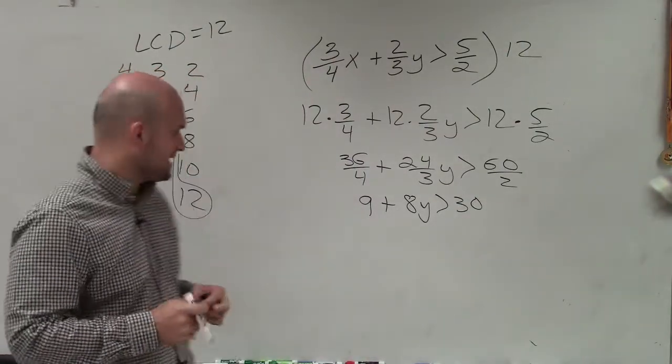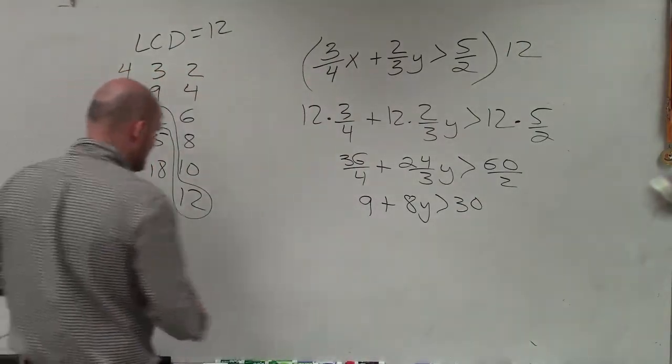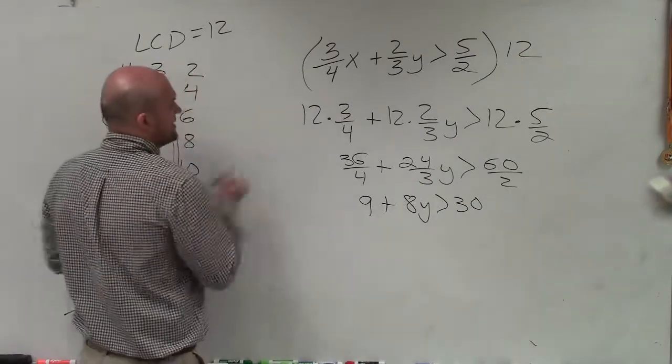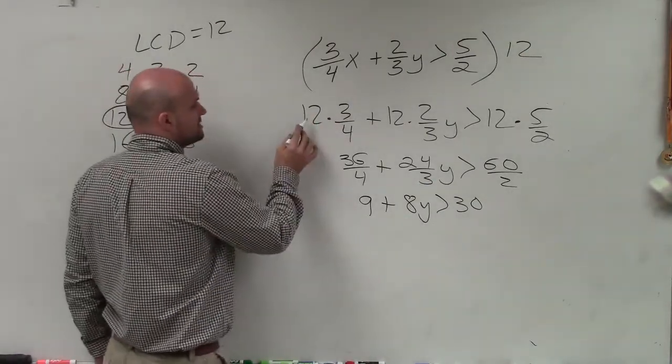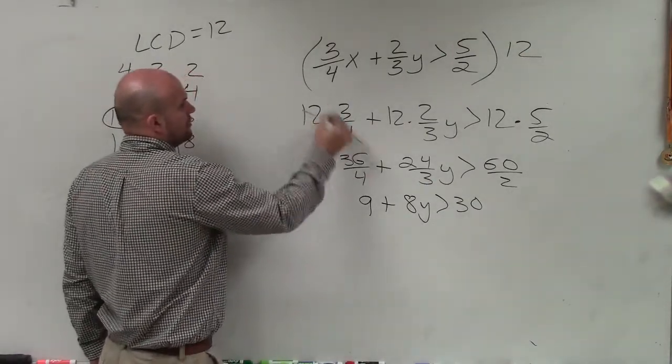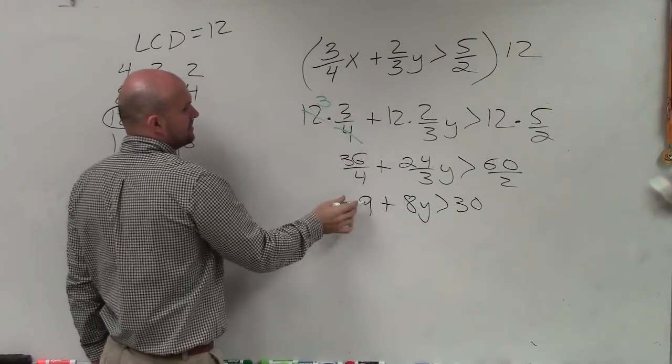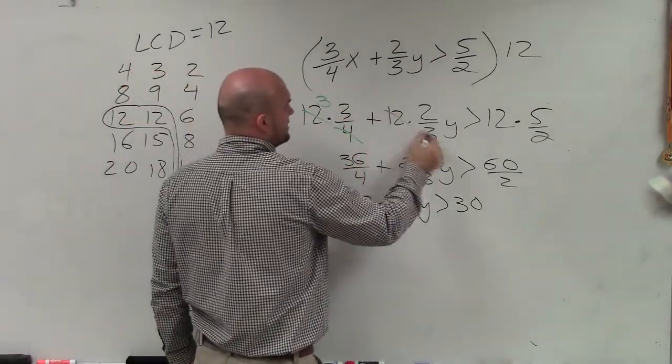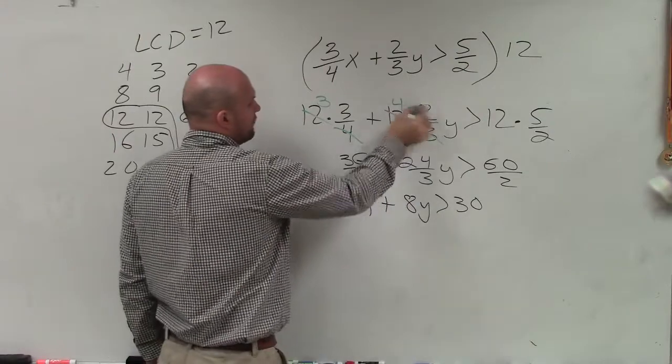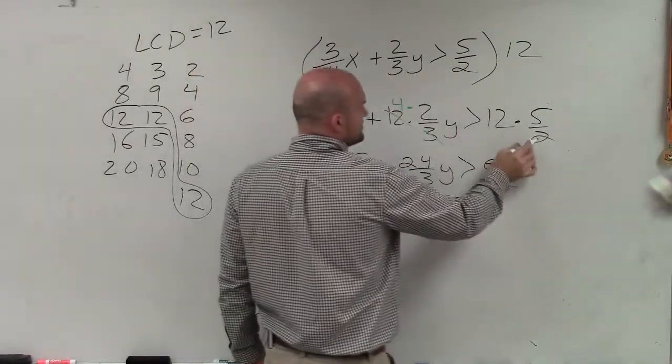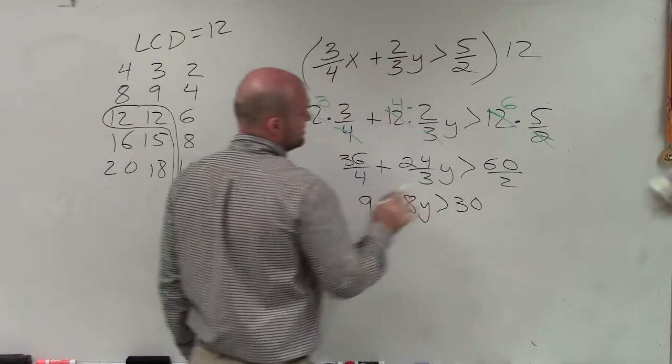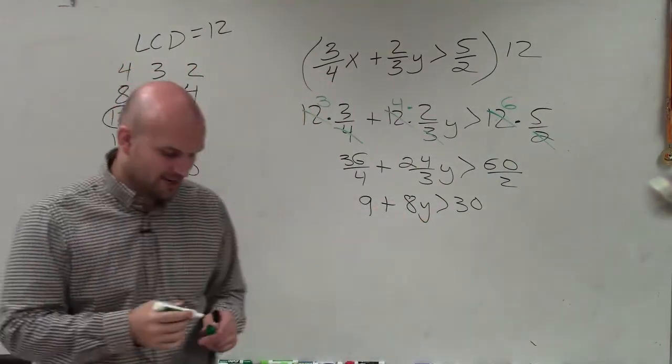There is an easier way, though, to sometimes also look at this. You can also, instead of multiplying 12 times 3, why don't we divide 12 divided by 4, which is 3. 3 times 3 is 9. 12 divided by 3 reduces down to 4. 4 times 2 is 8. 12 divided by 2 is 6. 6 times 5 is 30. So just another way to kind of think about it.